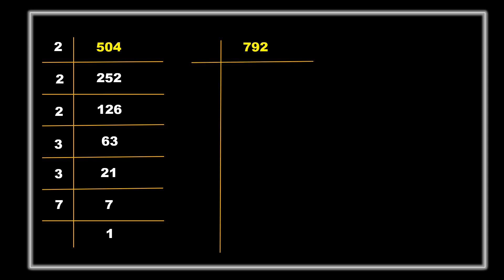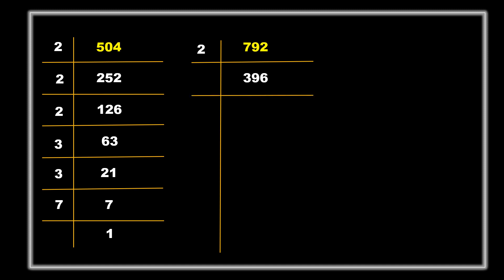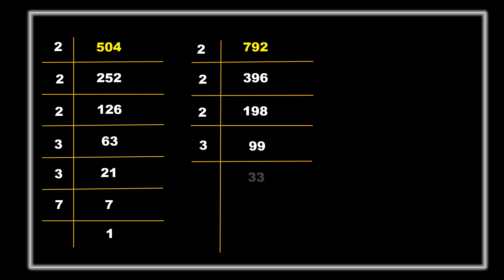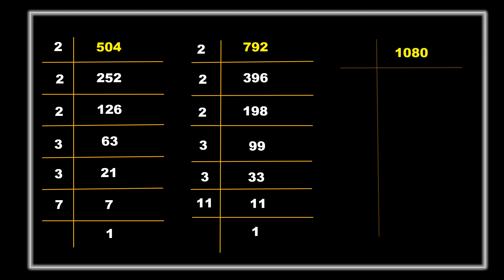Our next number is 792. Repeat the same procedure. The last digit is 2, so it goes in the 2 table: 792 ÷ 2 = 396, again ÷ 2 = 198, again ÷ 2 = 99. The last digit is 9, so it will not go in the 2 table; we take the 3 table: 99 ÷ 3 = 33, again ÷ 3 = 11. 11 is a prime number, so it goes only in the 11 table.